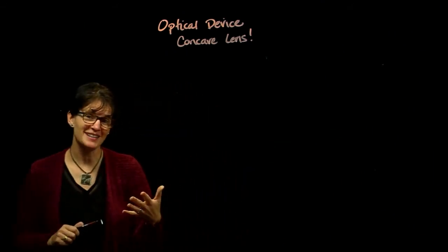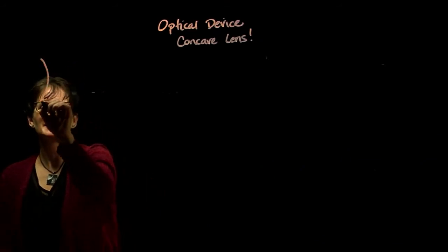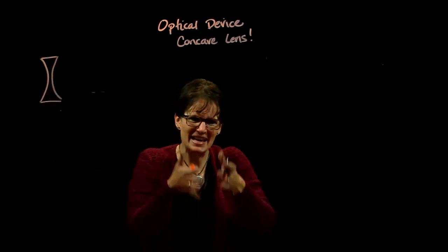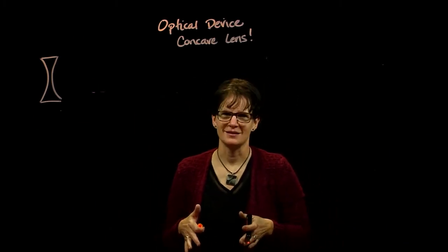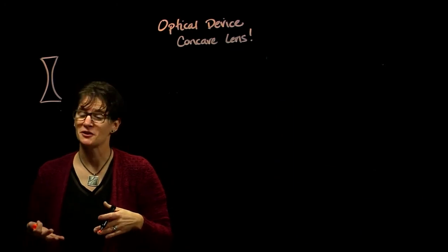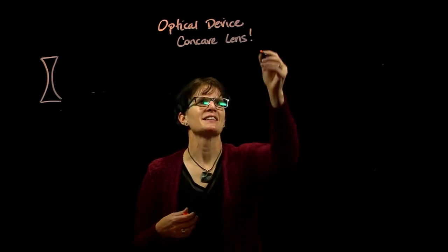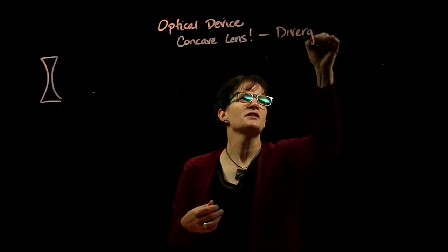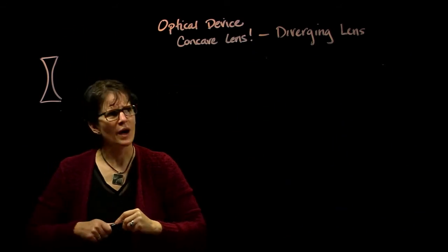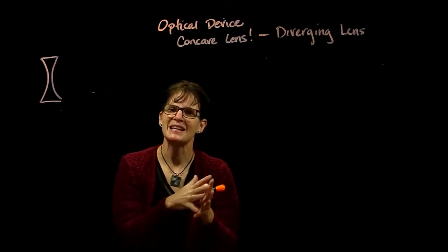Let's define what a concave lens is. 'Concave' is its shape definition — the surfaces of the lens bow inward, giving it a sort of hourglass or cave-like shape. But like the convex lens, the concave lens also has an operational definition: what it does to light when it refracts it through its surfaces. It diverges the light. So a concave lens is also called a diverging lens — meaning it spreads the light rays apart.